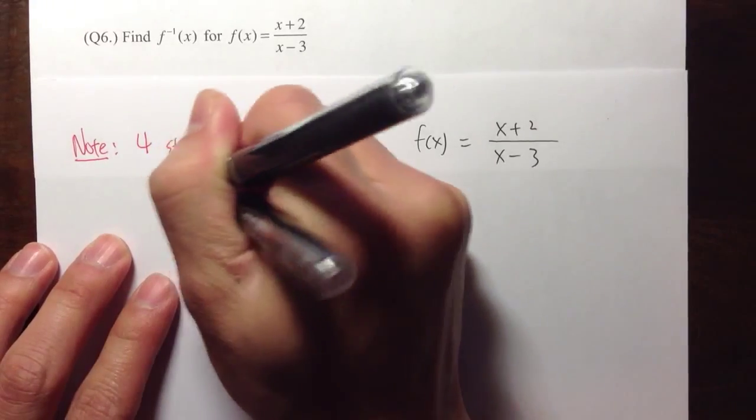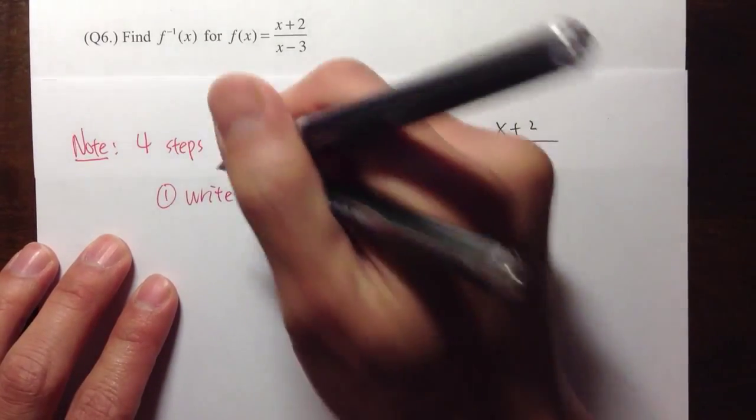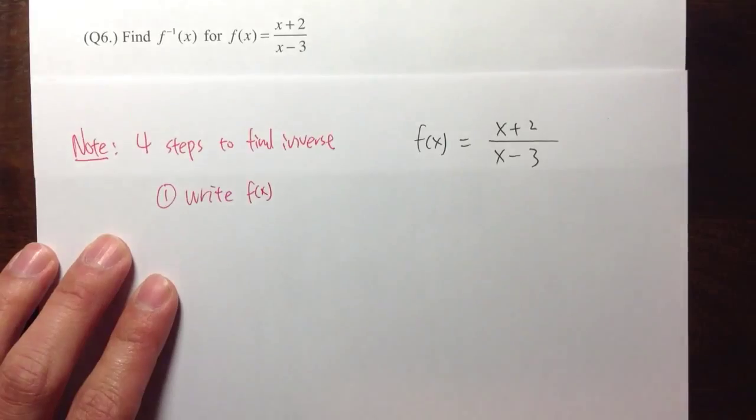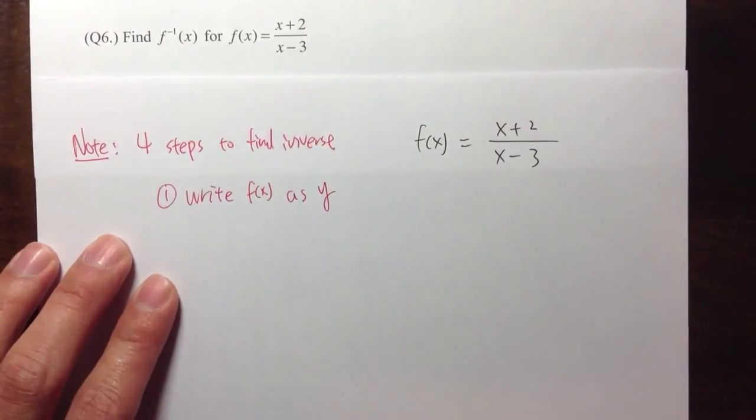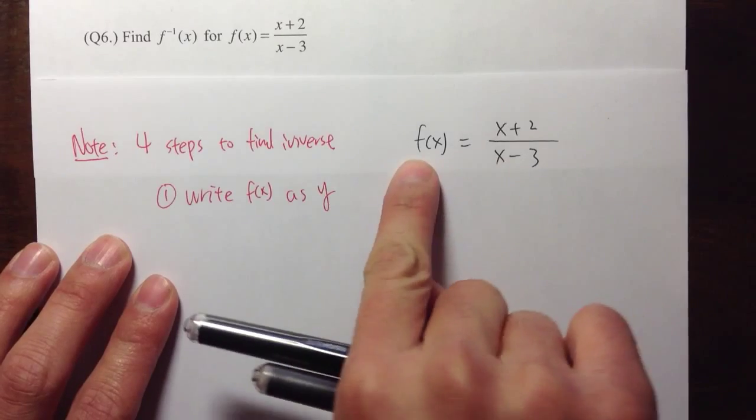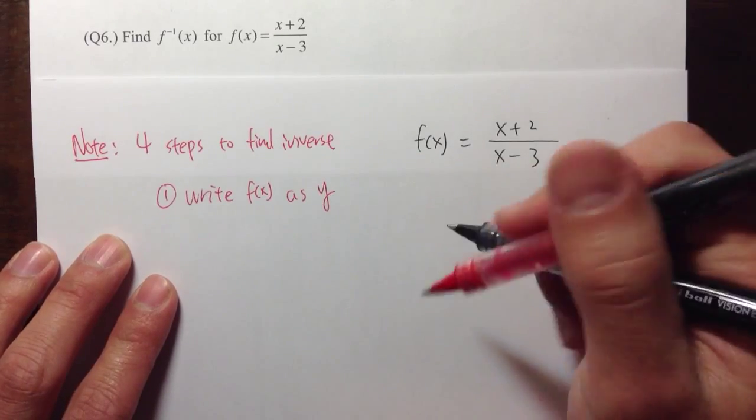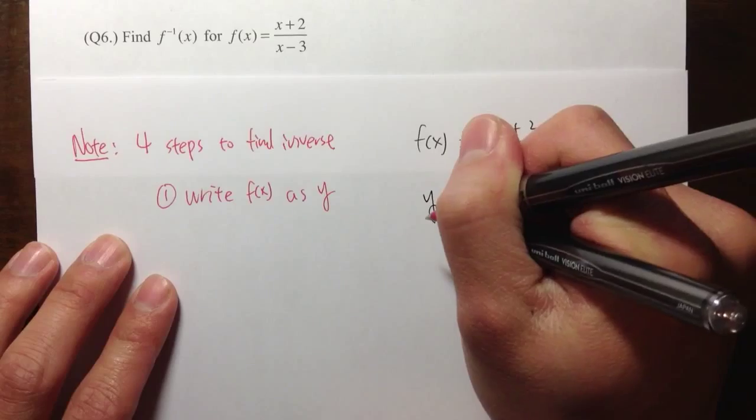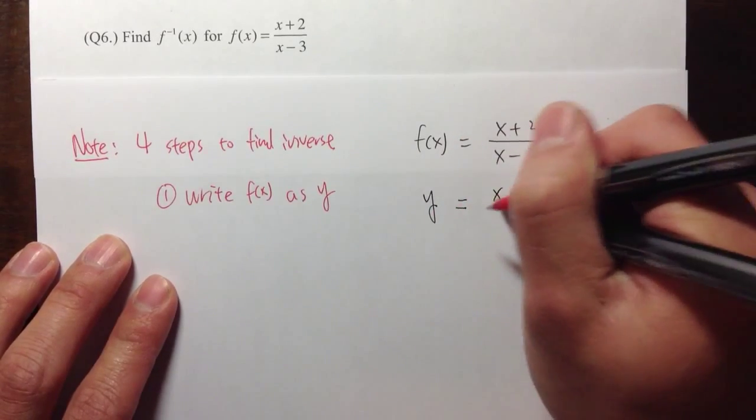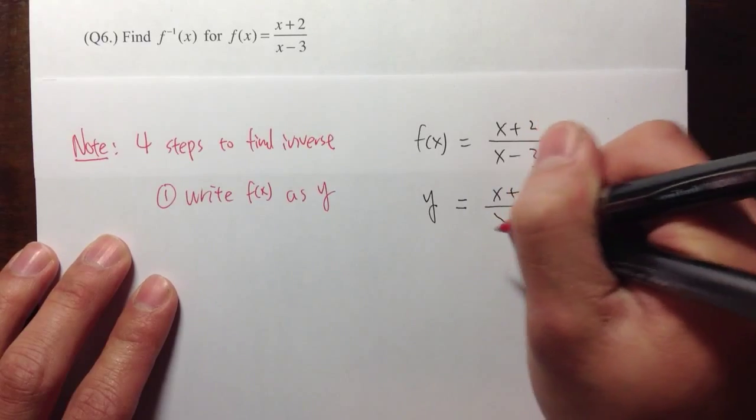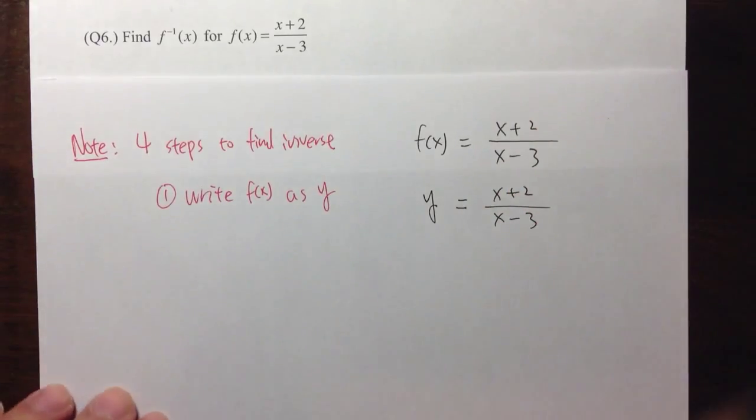First step, we are going to write the function notation, which in this case we have f of x. We are going to write f of x as y. So I see f of x right here. I am going to just write this as y and the rest stays the same. So equals to x plus 2 over x minus 3. That is my first step. Very simple. Just rewrite the function as y.